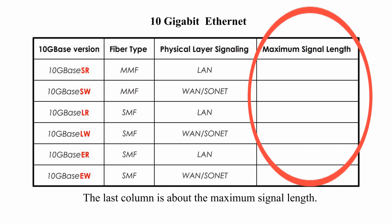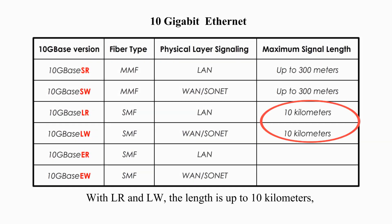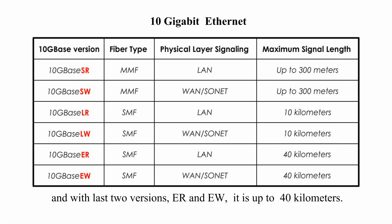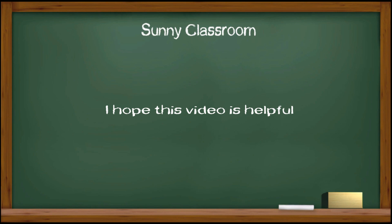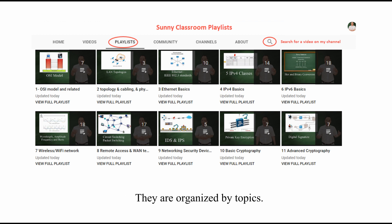The last column is about maximum signal length. With SR and SW, the maximum length is up to 300 meters. With LR and LW, the length is up to 10 kilometers. And with the last two versions, ER and EW, it is up to 40 kilometers. I hope this video is helpful. If you want to learn networking systematically, please check out my playlists — they are organized by topics. Thank you very much and see you next time.